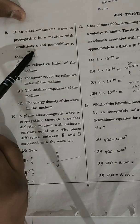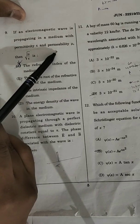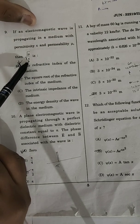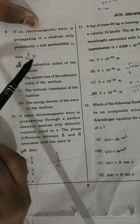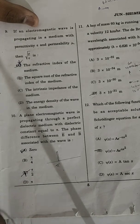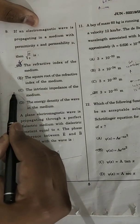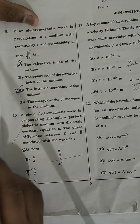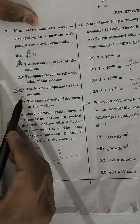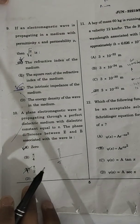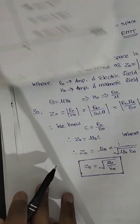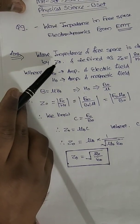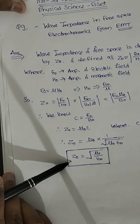So if an electromagnetic wave is propagating in a medium with permittivity E and permeability mu, then root(mu upon E) is the intrinsic impedance of the medium. Option C is correct, because we derived this on the basis of the wave impedance equation.